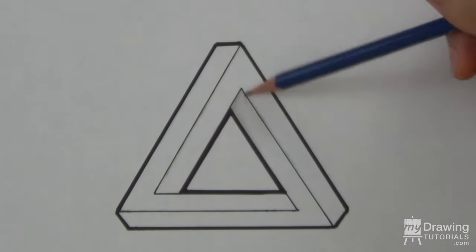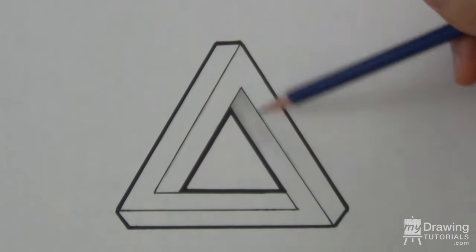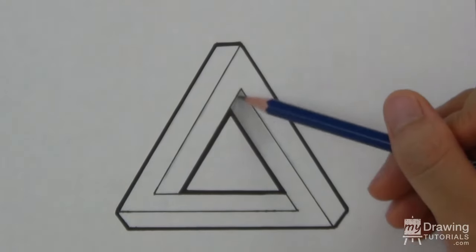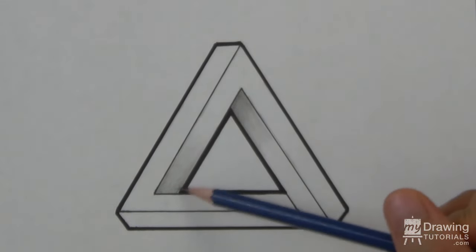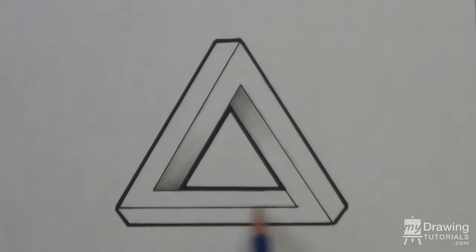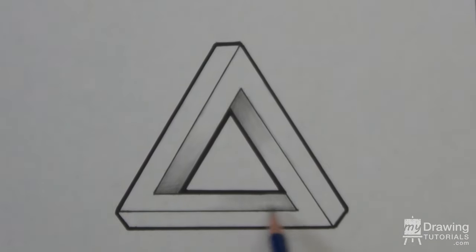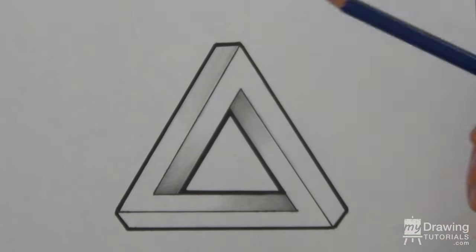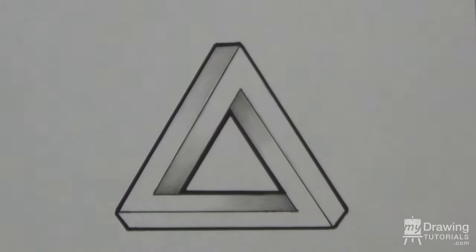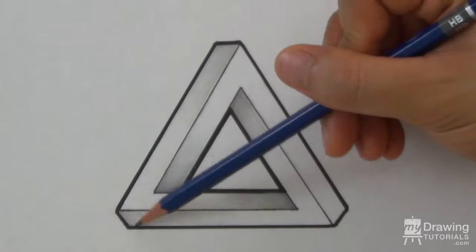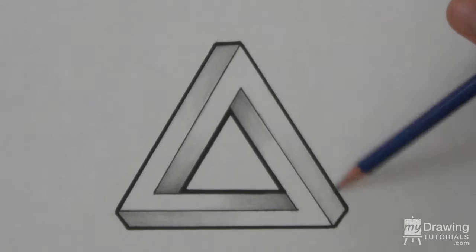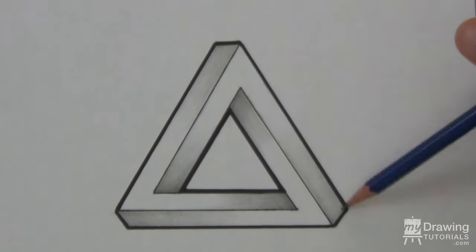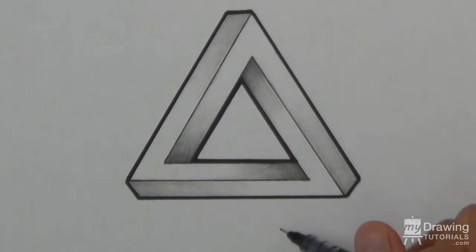And lastly, let's add some shading. Use a 2B pencil to put a gradation at the three inner corners of the triangle. Then let's add a lighter gradation using an HB pencil at the three outer corners. And we're all finished.